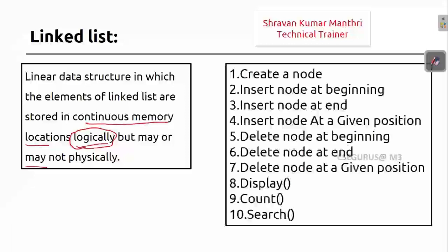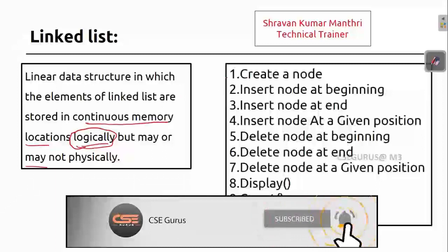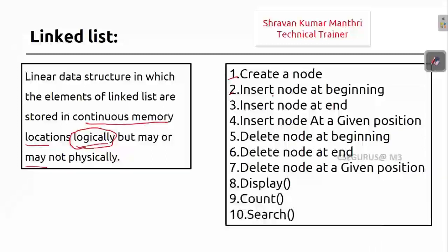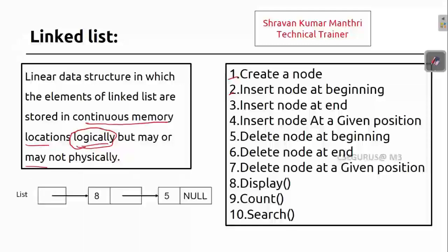In arrays, memory is both logically and physically continuous — but not in a linked list. In this series we'll cover: creating a node, inserting a node at the beginning, at the end, and at a given position; deleting at those same positions; displaying elements in sequence; counting how many elements are in the list; and searching for an element. I'll write code step by step — you can follow along with a compiler.